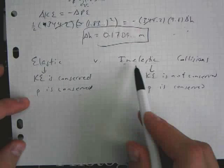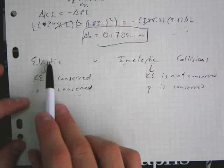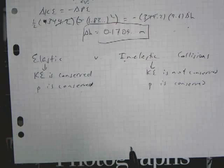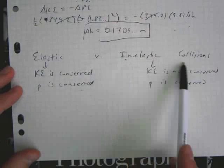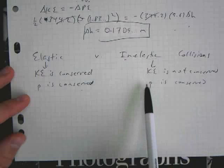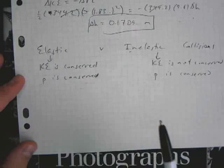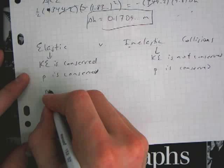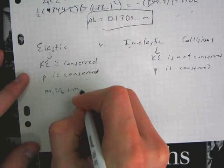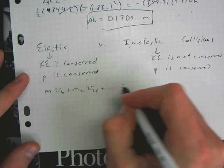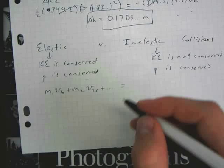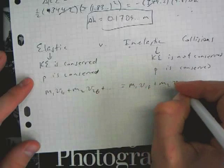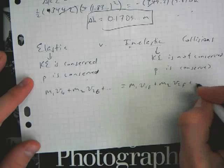And the only time a collision is going to be elastic is if the problem will specifically state that it is elastic. If it doesn't say anything, you just assume that it's inelastic and that your momentum is the only thing that's conserved. So, for both kinds of collisions, we can always write our conservation of momentum equation. Our M1V1 naught plus M2V2 naught is equal to M1V1 final plus M2V2 final.